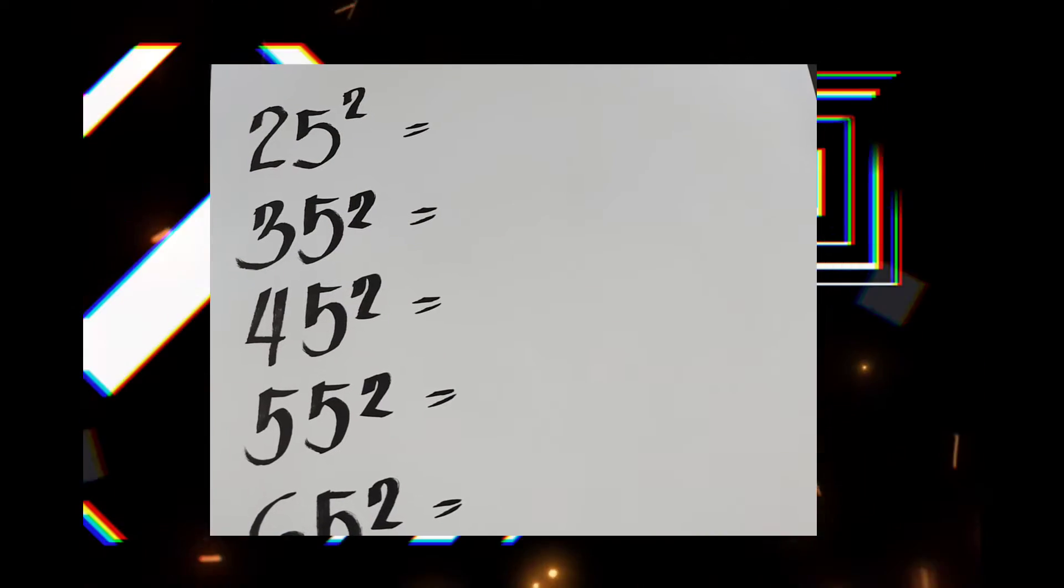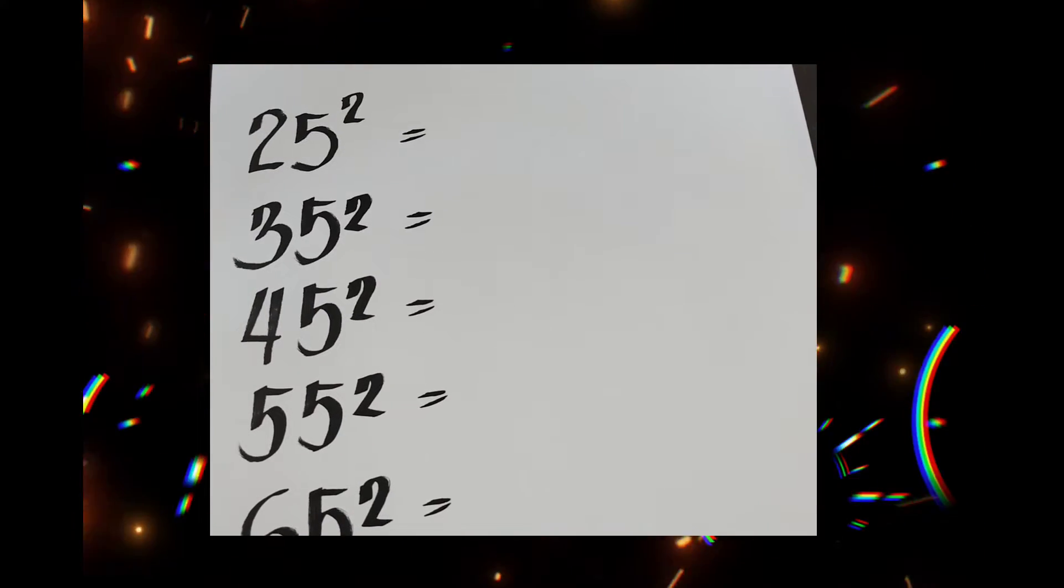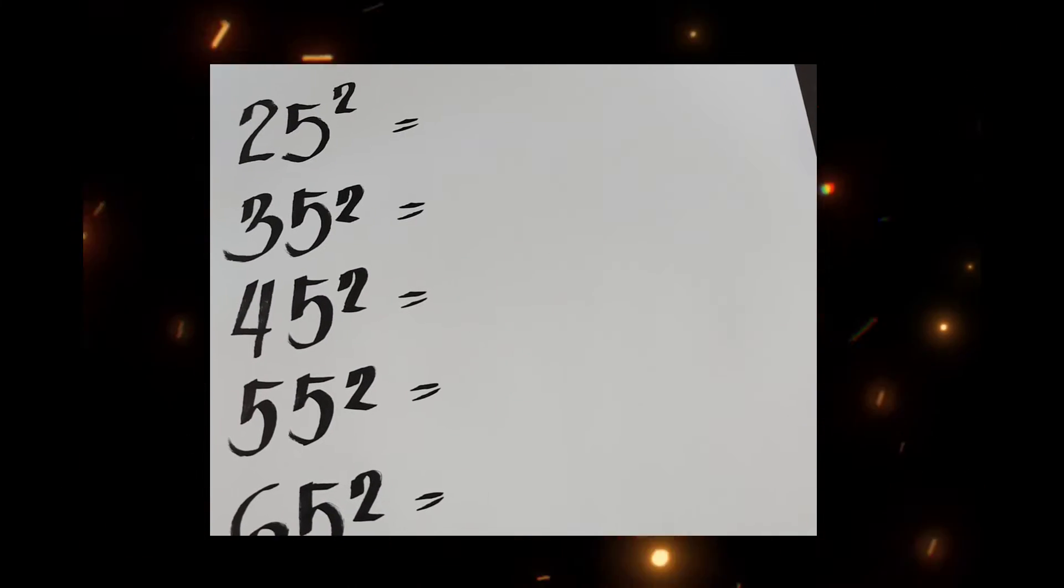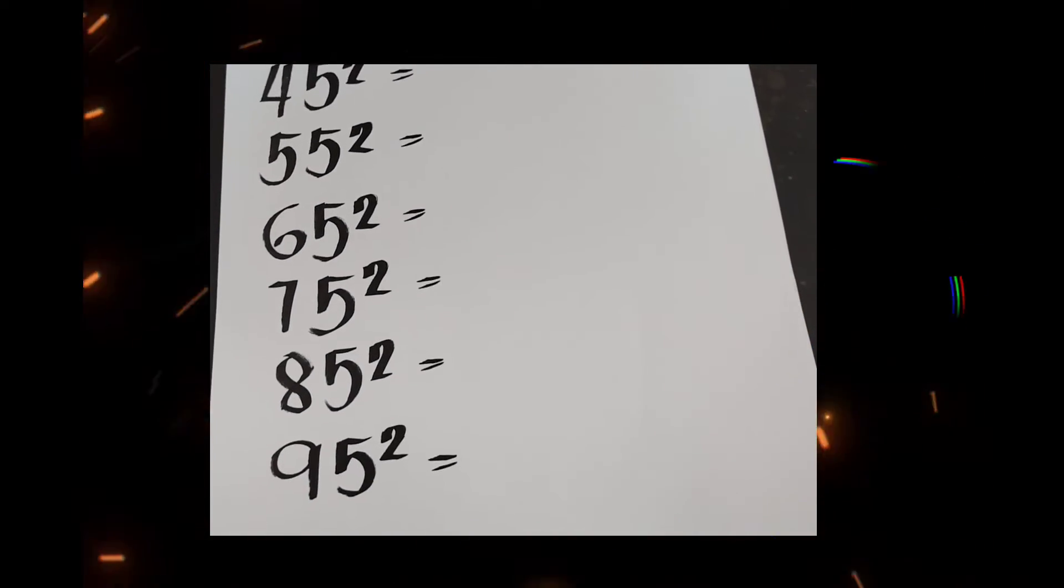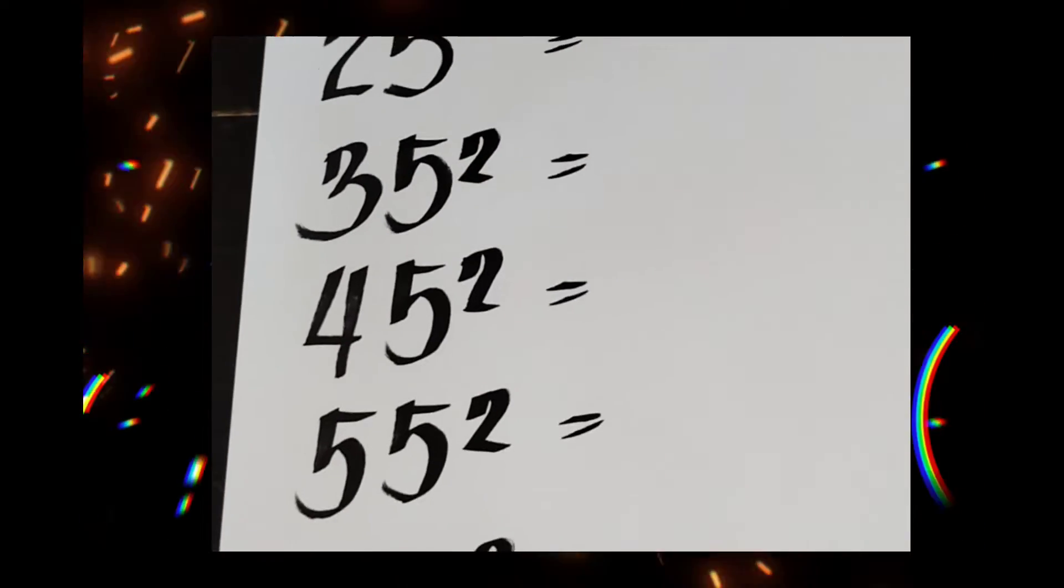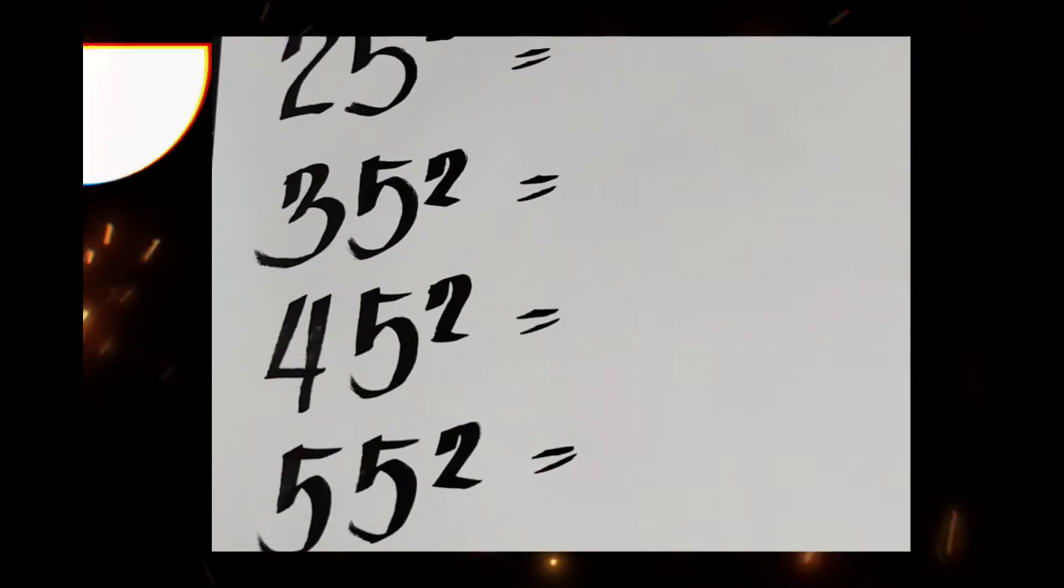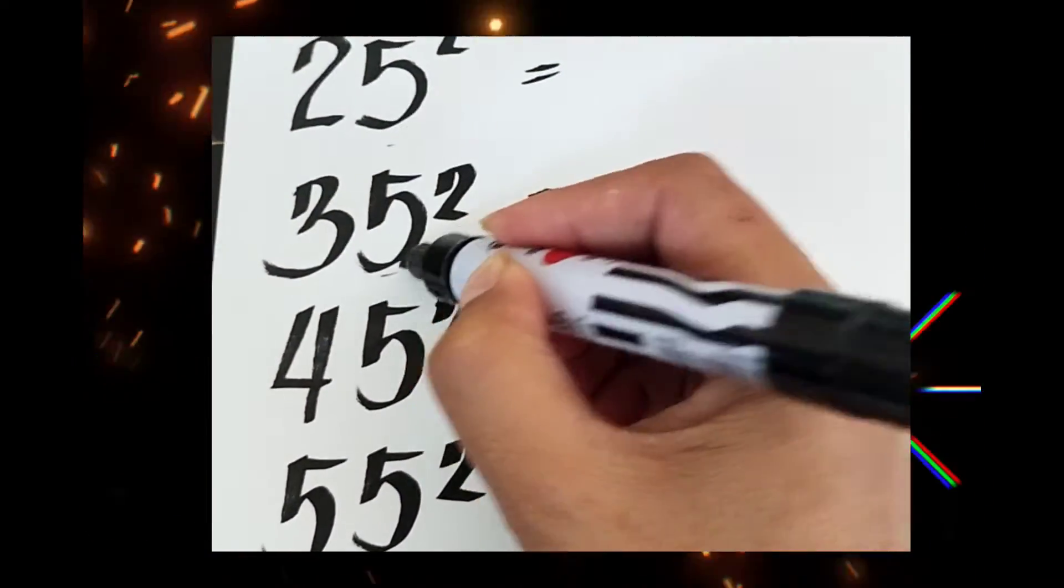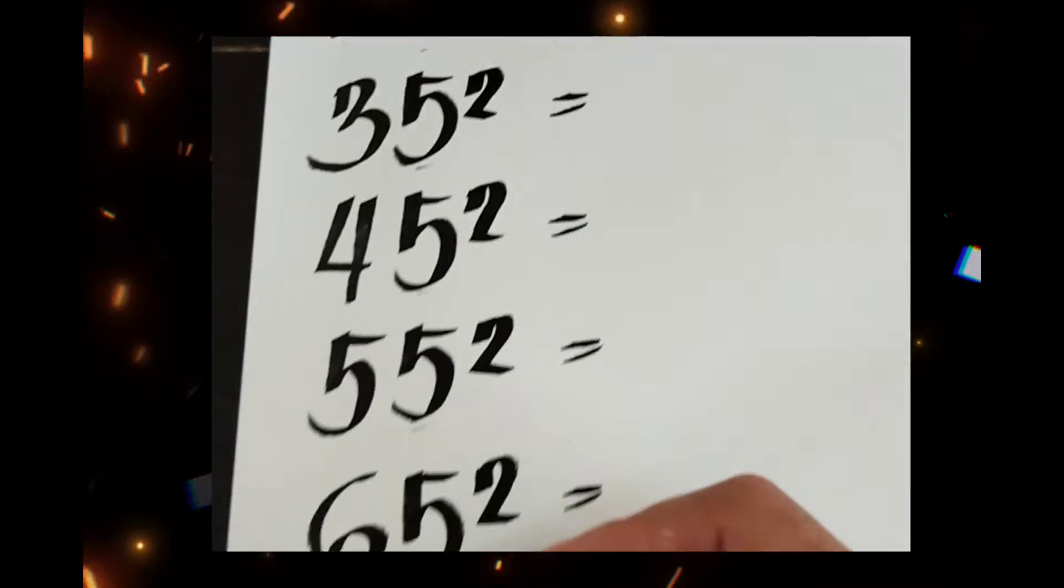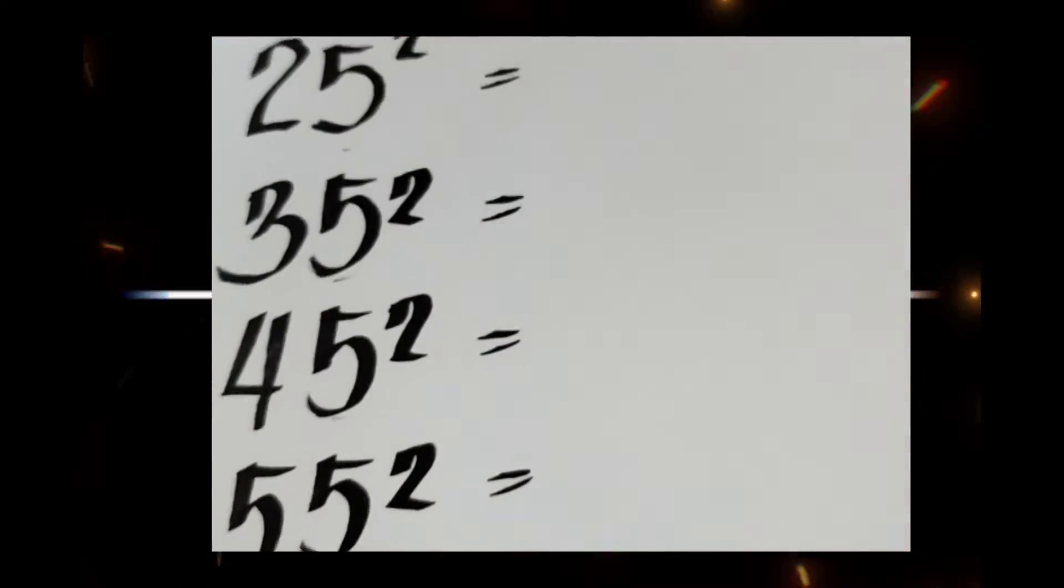Okay, hello guys. I am going to show you how to find the product of these squared numbers: 25², 35², 45², 55², 65², 75², 85², and 95². The technique that I'm going to share with you is only applicable to squared numbers ending in 5. As you notice, all the numbers here end in 5.